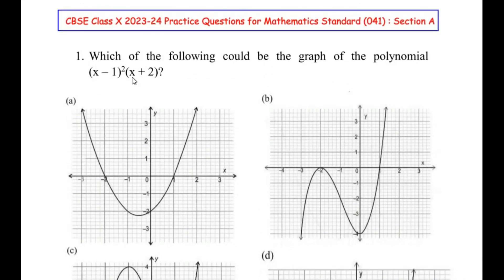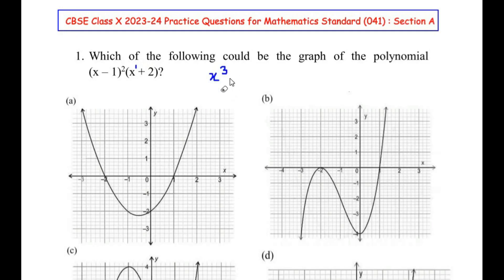This graph represents a cubic polynomial, where the degree or the power of x is 3. How do we know this is cubic? Here (x minus 1) to the power of 2 gives degree 2, and (x plus 2) has degree 1 since the power of the entire bracket is 1. So 2 plus 1 gives us a total degree of 3, making it a cubic polynomial.